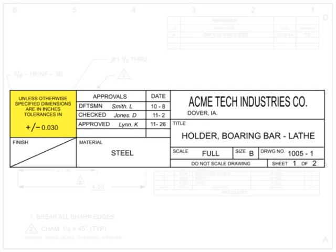Tolerances are defined as the difference between the lowest and highest acceptable limits of a dimension. It is almost impossible to machine parts to the exact dimension called out on the drawing. Tolerances allow a machinist to deviate within a specified limit that will not adversely affect the final part. The tolerances block contains the default tolerances for dimensional call-outs where no tolerance is otherwise noted, and should be followed unless specifically marked otherwise. Examples of tolerances are plus or minus 0.030 or plus 1/64th of an inch.